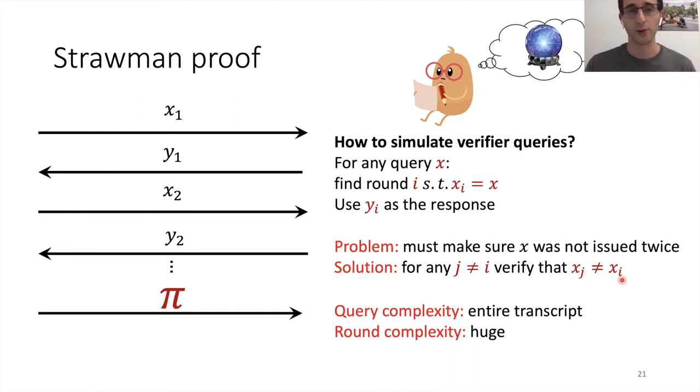So the solution is to go over all other rounds and verify that what was queried there is not the query that we're looking at. So at this point, let me just say, this is a valid IOP. We have completeness and we're going to have very good soundness. The problem is its complexity. So first, the query complexity. Well, we read the entire transcript. So it's not really an IOP, it's a very laconic IOP. And second, the round complexity is also huge. So we have a round for every query.